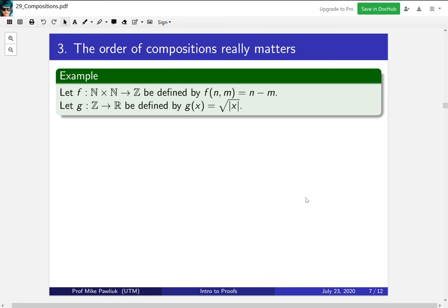Let f be the function from ℕ×ℕ to ℤ, defined by f(n,m) = n-m. Let g be the function from ℤ to ℝ, defined by g(x) = √|x|.